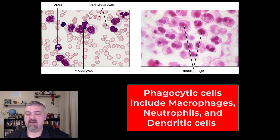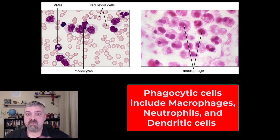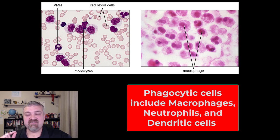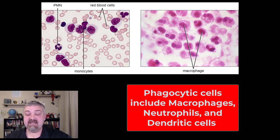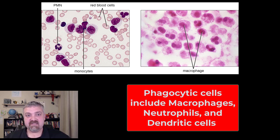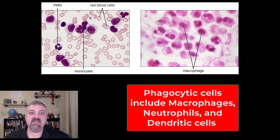The key phagocytic cells — there are others, but the key ones are going to be the macrophages, which you see here on the right-hand side, neutrophils, which we covered in a separate video when I walked through all the key white blood cells, and then the dendritic cells, which I'll show you at the end because those are good examples of antigen presenting cells. I like to think of this as your first line of defense. Once one of those barriers have been breached, like your skin and your mucous membranes, phagocytic cells like these are going to be your first line of defense.